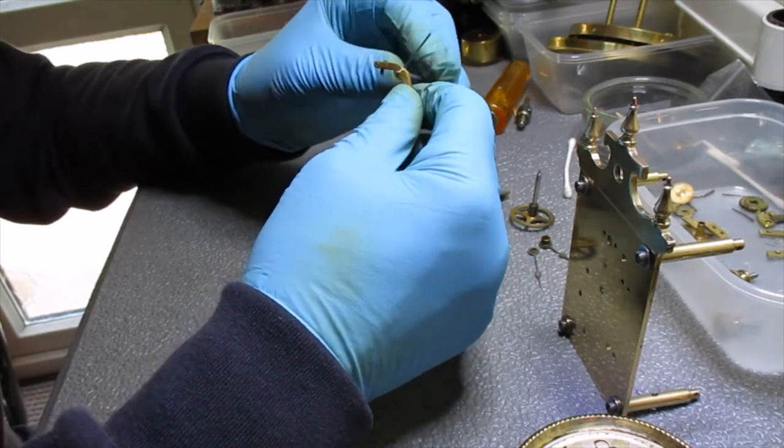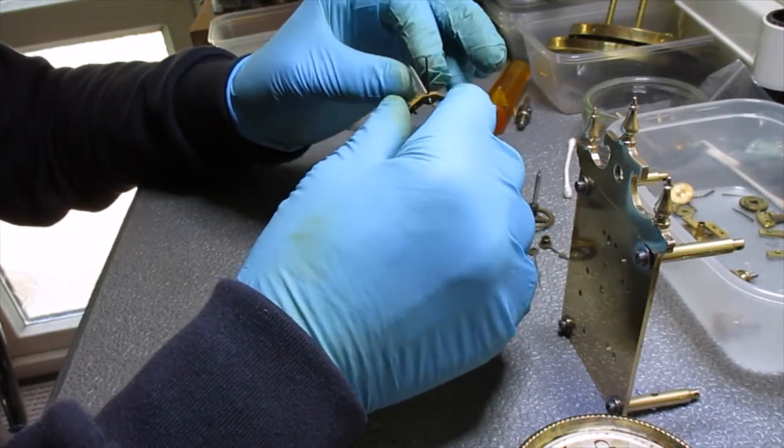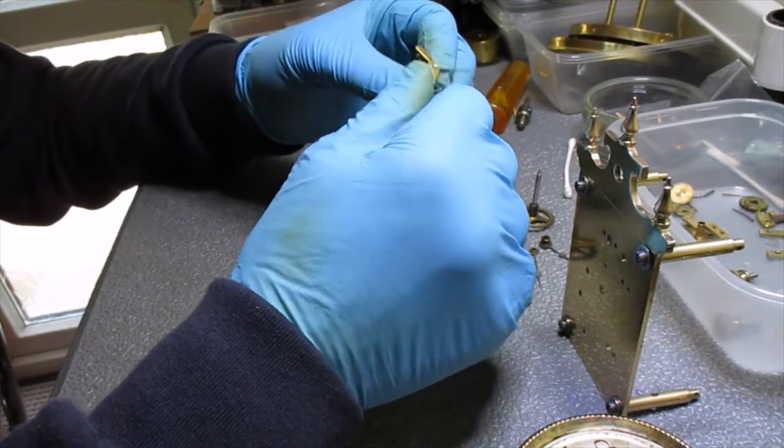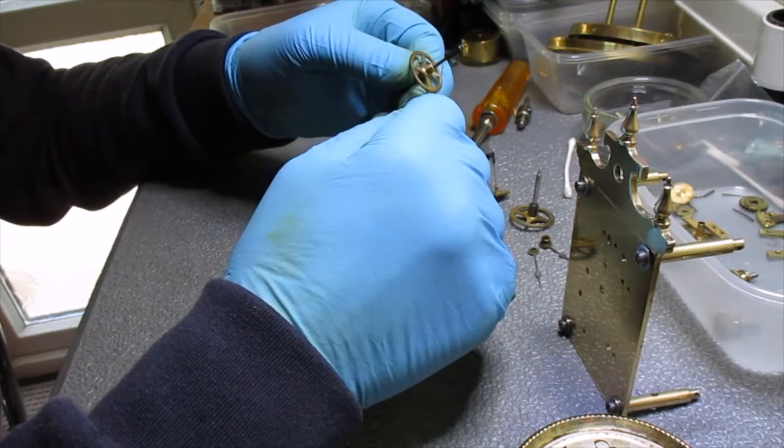But it should be quite nice now I've polished the pivots up, or I should say burnished the pivots. There wasn't any real rust on them, which was lucky, but mainly the rust was on the arbors itself.